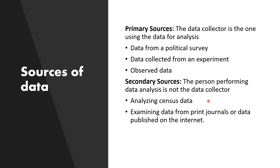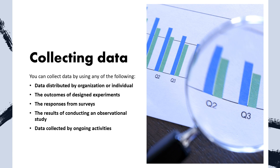Secondary sources include analyzing a census, examining data from print journals, or data published on the internet — in other words, data given by an organization. There are five methods of data collection: data distributed by an organization or individual; the outcome of a designed experiment; responses from a survey; the result of conducting an observational study; and data collected by ongoing business activities.